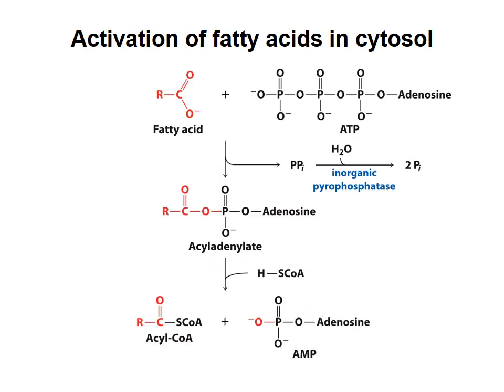To transport fatty acids from the cytosol into the matrix, they must first be activated by attachment to coenzyme A. This process is energetically costly, requiring hydrolysis of ATP to AMP and 2 phosphates. The resulting fatty acyl-CoA is transported into the mitochondrial matrix. Note that activation and transport of fatty acids is not part of beta-oxidation, but it is required to move the fatty acid so that beta-oxidation can occur.